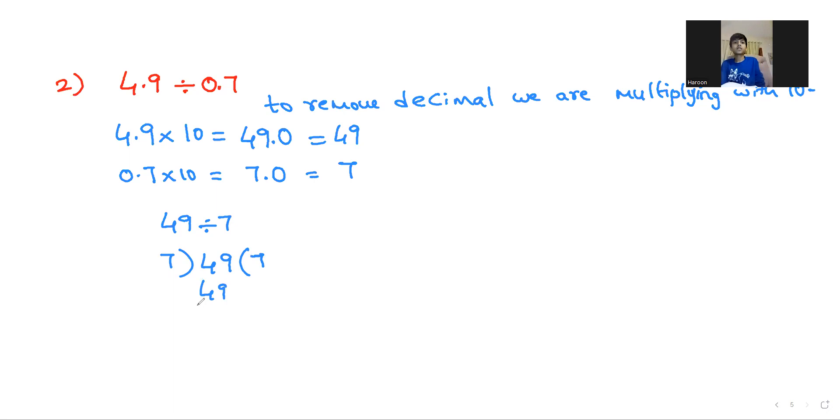Yes, 7 sevens are 49. So this is nothing but 4.9 divided with 0.7.